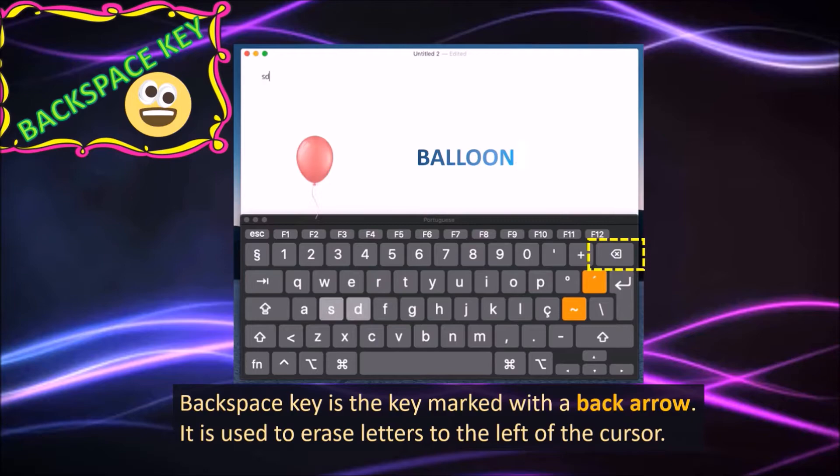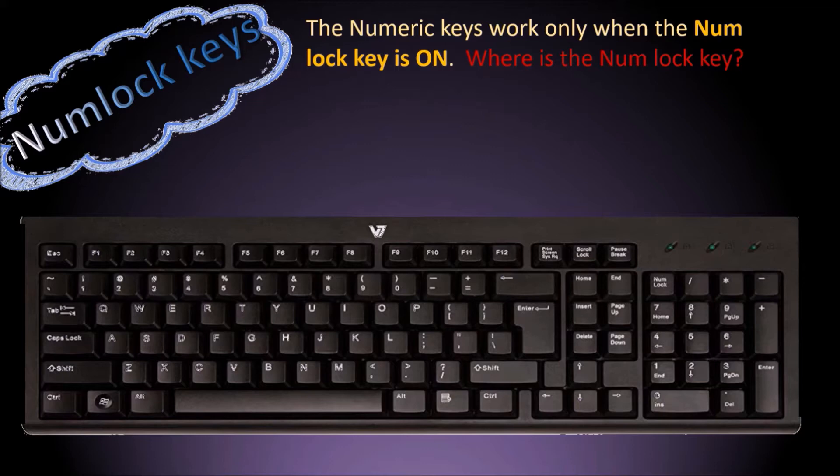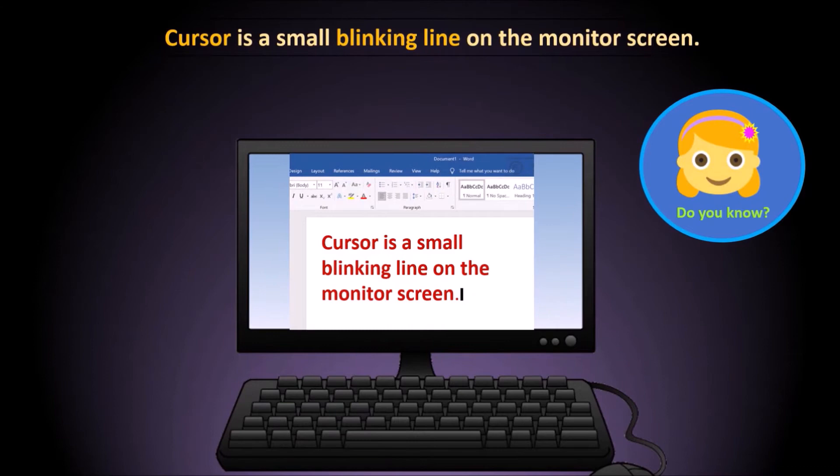The numeric keypad works only when you press the Num Lock key and keep it on. Try to find the Num Lock key on the keyboard and press it on and off — the keyboard has a light for this. The cursor is a small blinking light on the monitor screen.